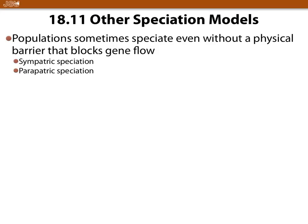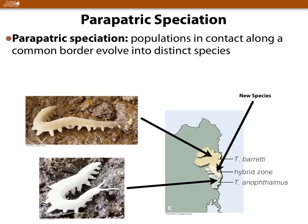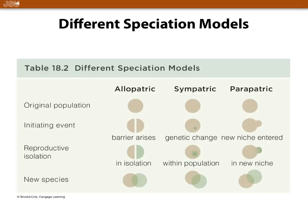Sometimes speciation happens without a physical barrier. Sympatric speciation is when a change happens in a very small number of individuals and this change prevents them from reproducing with others in that population — for example, a change in chromosome number in plants (polyploidy) that makes those plants unable to reproduce with others, forming its own population. Parapatric speciation is when a third species forms in the middle from a mix of two species sharing a common border.